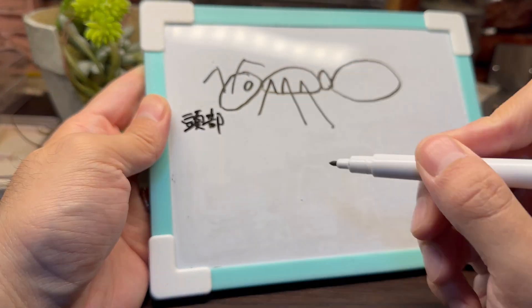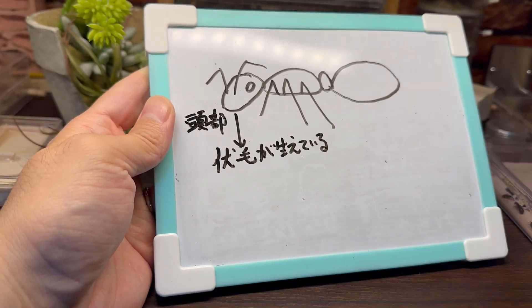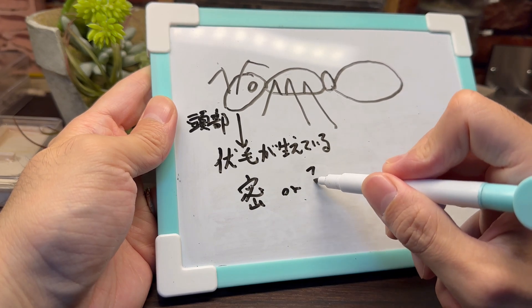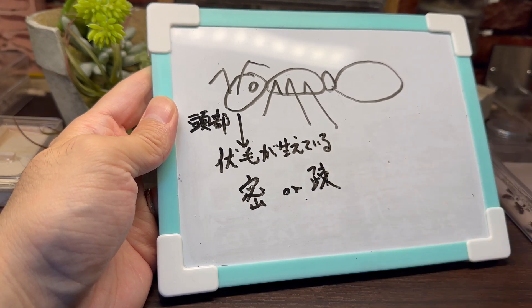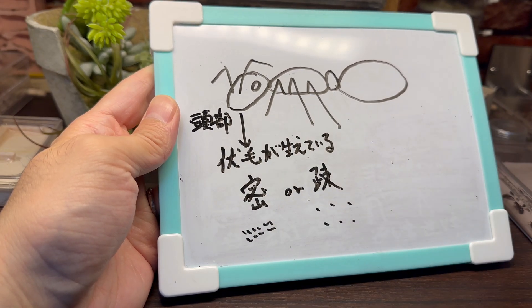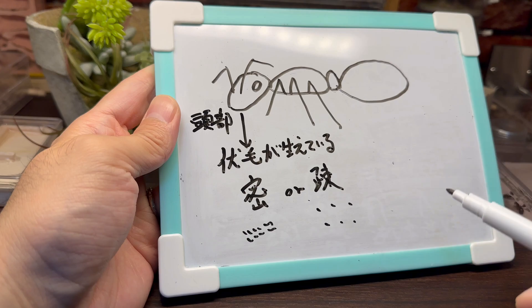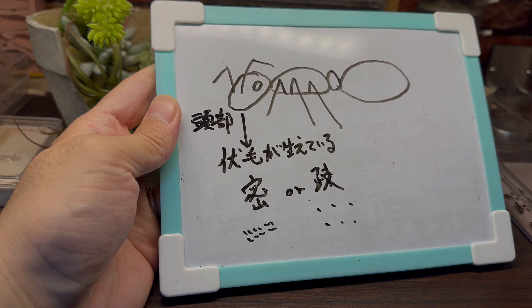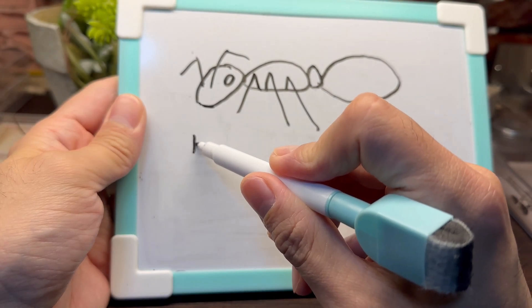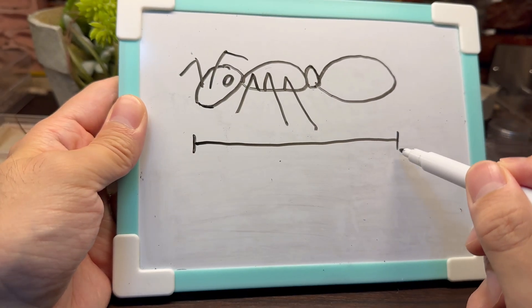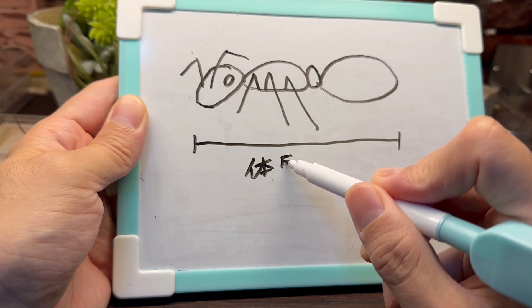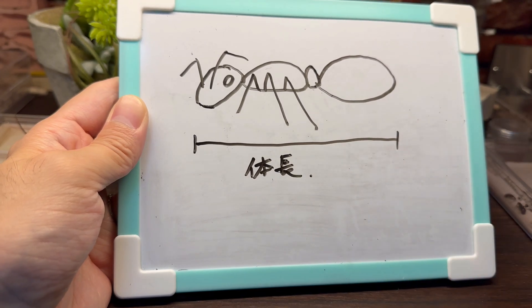次に頭部の伏毛についての特徴です。草アリの仲間の頭部には伏毛が生えています。伏毛の密度は種類によって異なり、密であるか疎であるかを確認することも同定の際の判断材料の一つとなります。最後に体長についてです。草アリの仲間はどれも同じようなサイズをしていますが、種類によりわずかに小さなもの、大きなものなどが存在します。